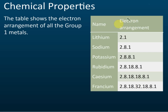Looking at the electron arrangements table: you only need to remember up to the third element. Lithium is 2,1; sodium is 2,8,1; and potassium is 2,8,8,1. You don't need to memorize arrangements for rubidium and cesium. They all have the same number of valence electrons, which is why they have the same chemical properties and are placed in the same group.